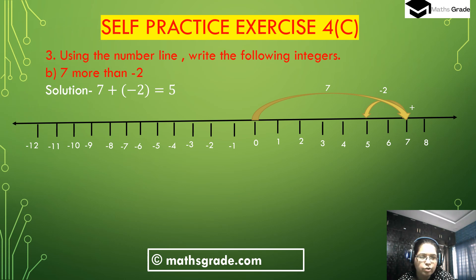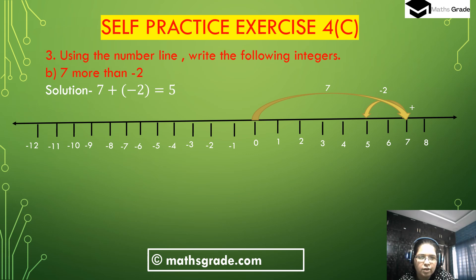Second bit (b): 7 more than minus 2. 7 is a positive integer, so starting from 0 the number goes to the right to 7. 'More than' means plus, so from 7 we go to the left hand side by 2 (since minus 2 is negative). 7 to 6 is 1, 6 to 5 is 2. The number now is at 5. So 7 more than minus 2 will be 7 plus minus 2 equals 5.